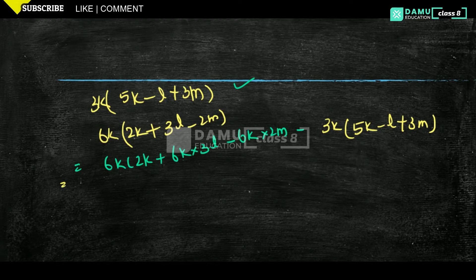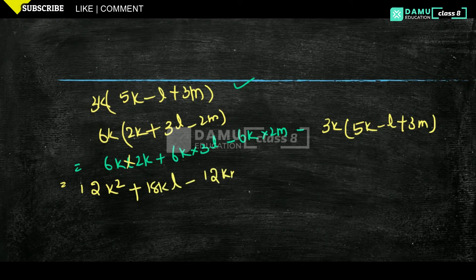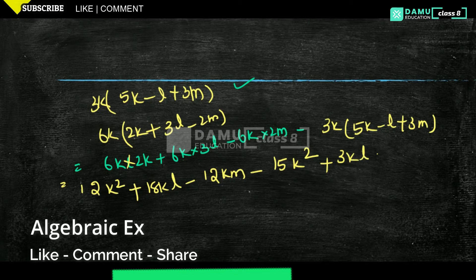So what you can solve here is: 6k into 2k gives 12k squared, plus 6k into 3l gives 18kl, minus 6k into 2m gives 12km. Then minus 3k into 5k gives minus 15k squared. Minus into minus becomes plus, so plus 3kl; minus into plus becomes minus, so minus 9km.